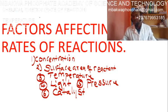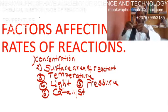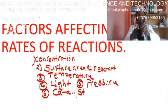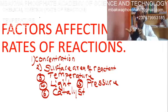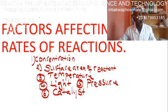Factors affecting the rate of chemical reaction. In this video we'll be looking at the different factors as we see on the board. We have concentration, surface area of reactant, temperature, light, pressure, and catalyst.